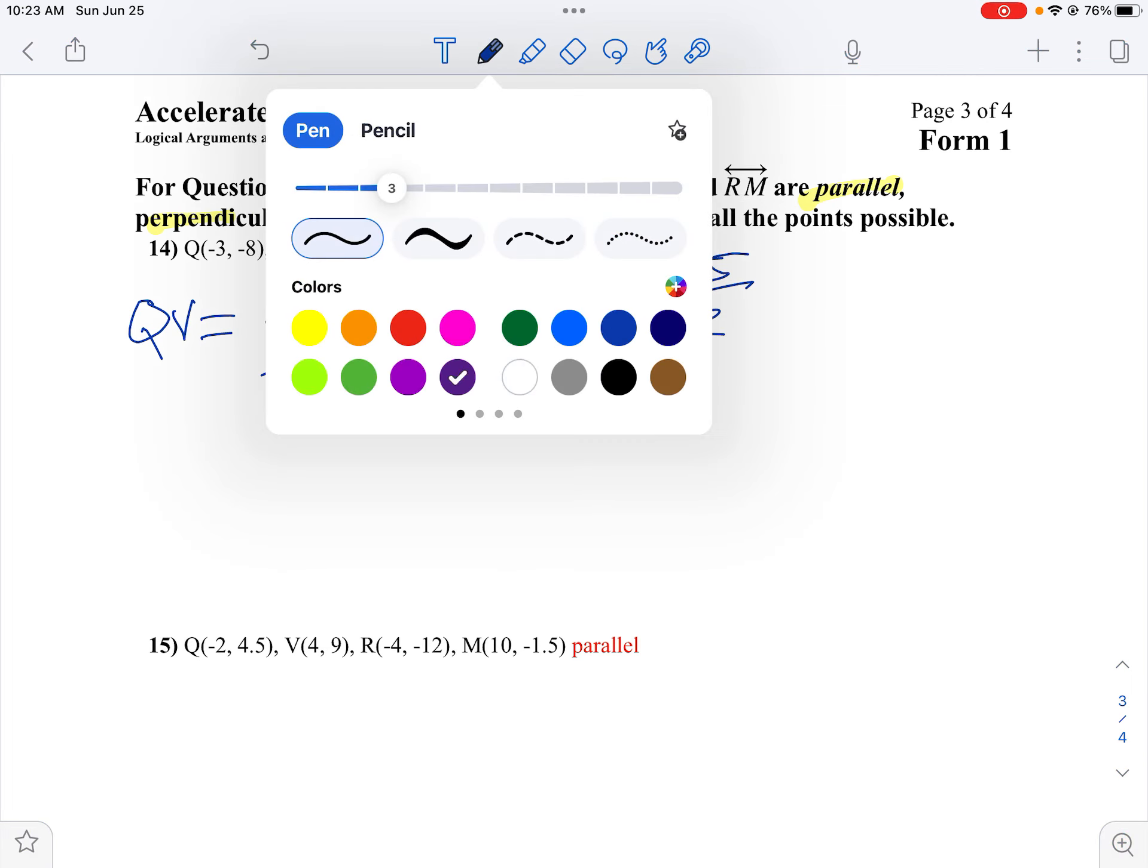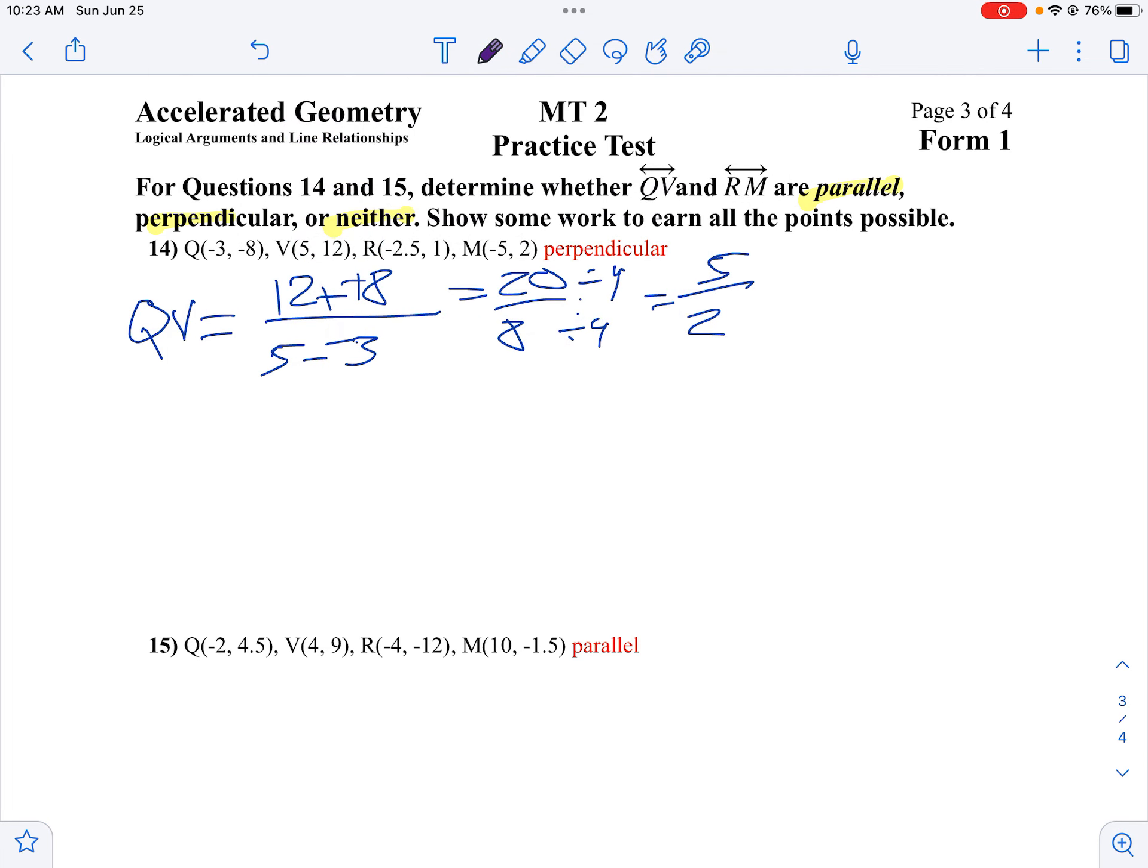Then I'm going to compare that to the slope of R to M. I'm going to go through the same thing. So R to M is going to be 2 minus 1 all over negative 5 minus negative 2.5. 2 minus 1 is 1. Negative 5 plus 2.5 is negative 7.5.